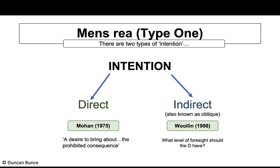What level of foresight would be fair? In a murder case the consequence for the defendant if found guilty is significant — a mandatory life sentence, a criminal record, and loss of liberty. If the standard of foresight is pitched too low, it becomes too easy to find the defendant guilty, which is unfair on the defendant.